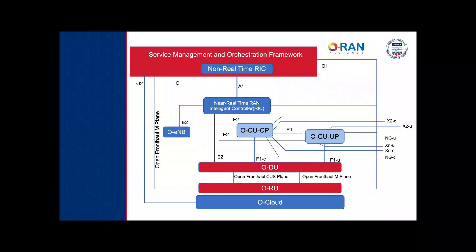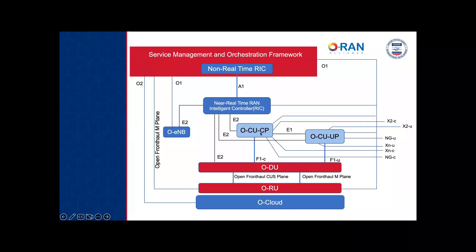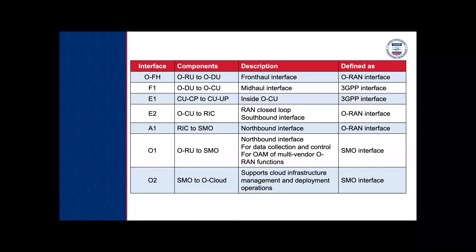Another way to view the radio access network shows the different interfaces and their purposes: F1, open front-haul, connecting the CUs and the M plane, and others. You can also see E-NodeB here, showing that the near-real-time RIC can connect several different Node Bs — some for 5G, some for 4G. These interfaces are each defined by different organizations, whether ORAN, 3GPP, and so on.